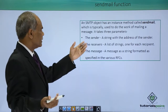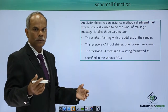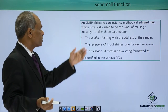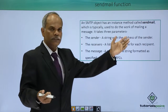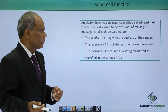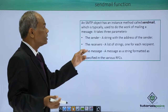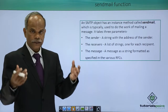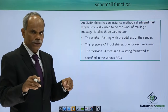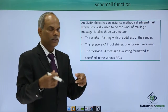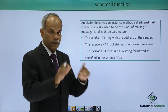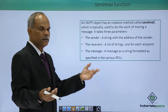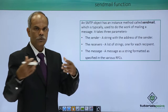Obviously there is a sender — the email ID of the sender. The string with the address of the sender is the description of the first argument. There can be more than one receiver; if that is the case, the IDs of all the receivers are provided in a list object — a list of strings, one for each recipient. And thirdly, the message to be delivered.